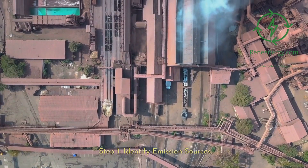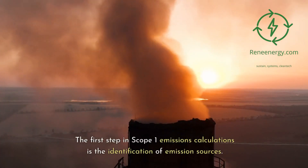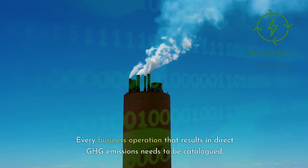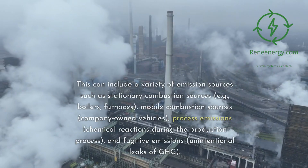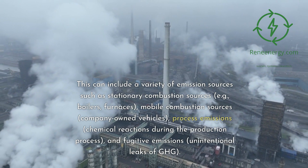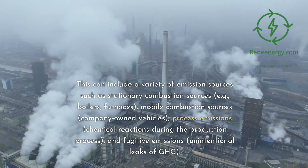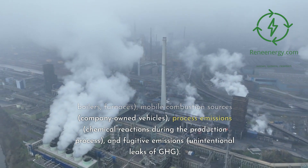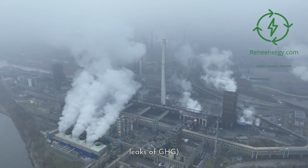Step 1: Identify Emission Sources. The first step in Scope 1 emissions calculations is the identification of emission sources. Every business operation that results in direct GHG emissions needs to be cataloged. This can include a variety of emission sources such as stationary combustion sources — for example, boilers and furnaces — mobile combustion sources like company-owned vehicles, process emissions from chemical reactions during the production process, and fugitive emissions, which are unintentional leaks of GHG.